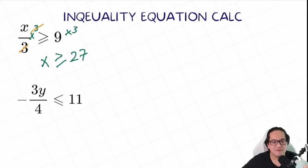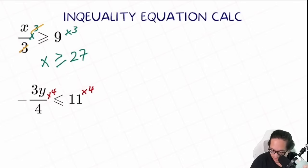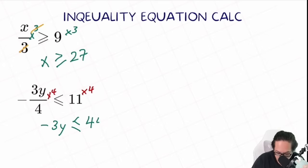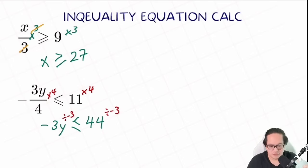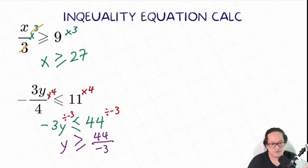Next question: we have negative 3y over 4 smaller or equal to 11. So let's isolate them one by one. The first step, we can multiply 4 on both sides, so the 4 as a denominator will get canceled out. What we have left is negative 3y smaller or equal to 11 multiplied by 4, equal to 44. Now the next step, we need to divide negative 3 on both sides to isolate y. And since we divide by a negative number, make sure we flip that sign first.